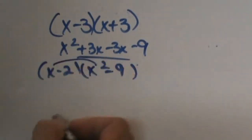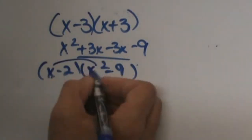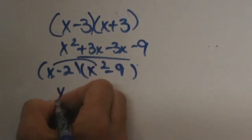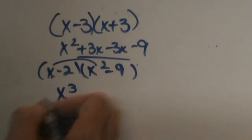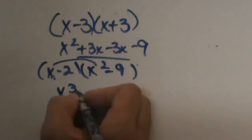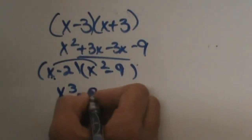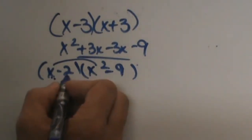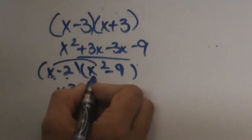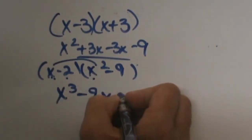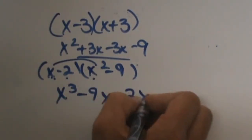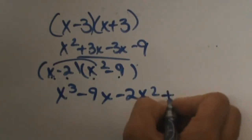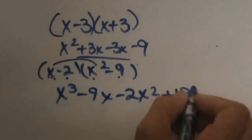Now let's FOIL. x times x squared is x cubed. x times negative 9 is negative 9x. Negative 2 times x squared is negative 2x squared. Negative 2 times negative 9 is positive 18.